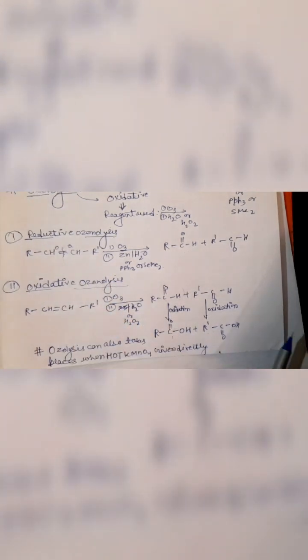One more thing I have to tell you about oxidative ozonolysis: ozonolysis can also take place when hot KMnO4 is given directly. The same process takes place with alkenes when hot KMnO4 is present. This is an important thing.